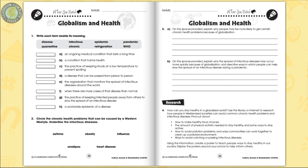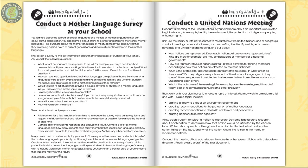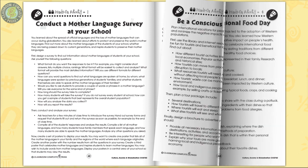The after-you-read sections include short and long questions for comprehension, followed by a research activity. Represent a nation during a United Nations meeting to draft additions to human rights law. The hands-on activities are extension activities designed to get your students thinking and elaborating on everything they have learned so far.